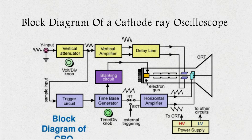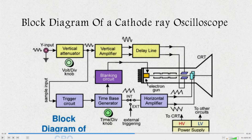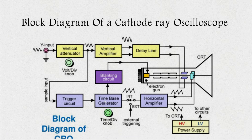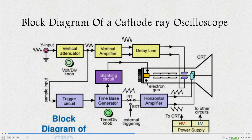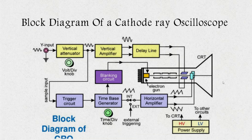The same signal which is given as input to the vertical amplifier is also transferred to a trigger circuit, which triggers the time-based generator to form a ramp-like signal. This ramp signal is given to the horizontal amplifier which amplifies it and helps the electrons to spread over the CRT screen.